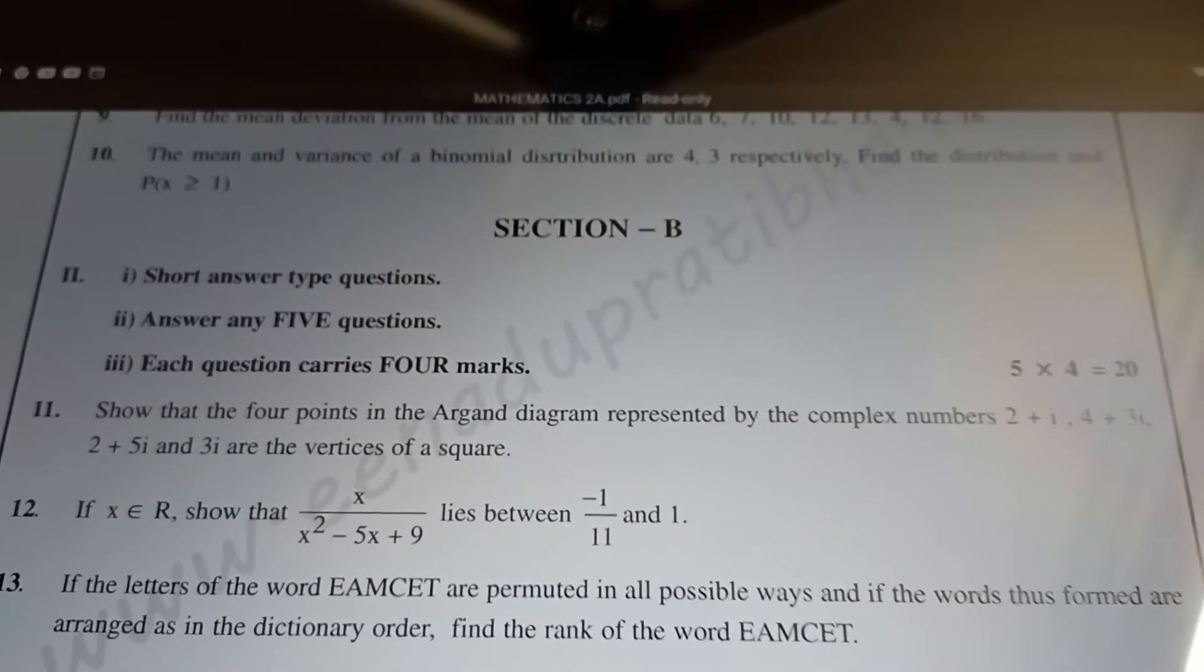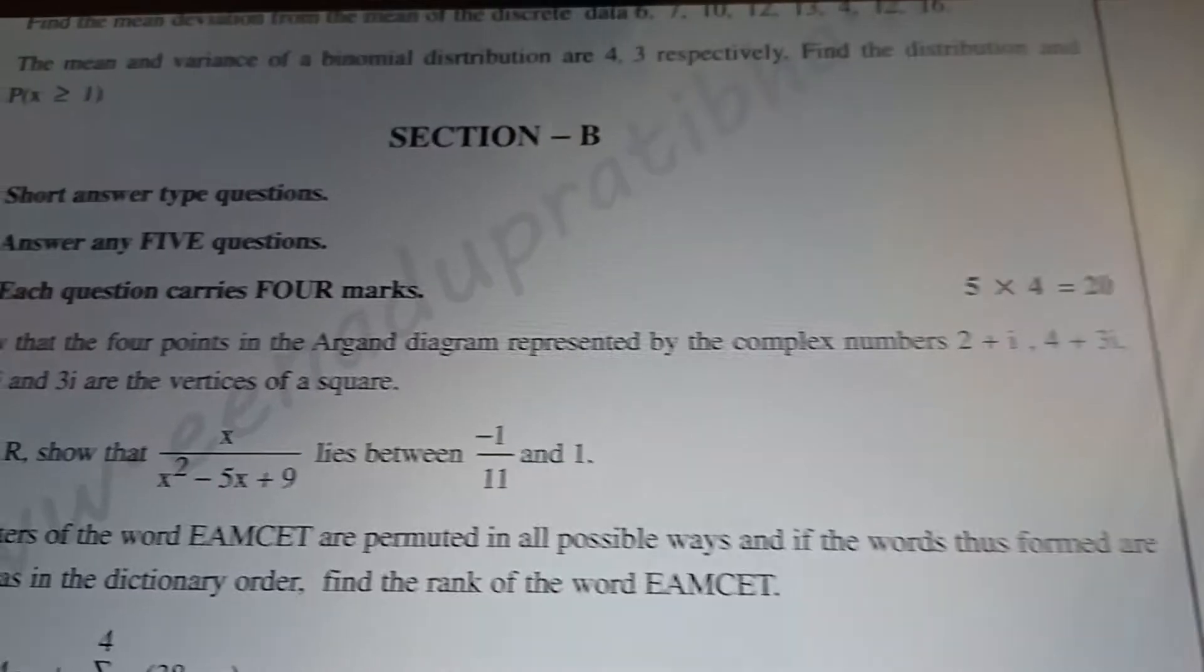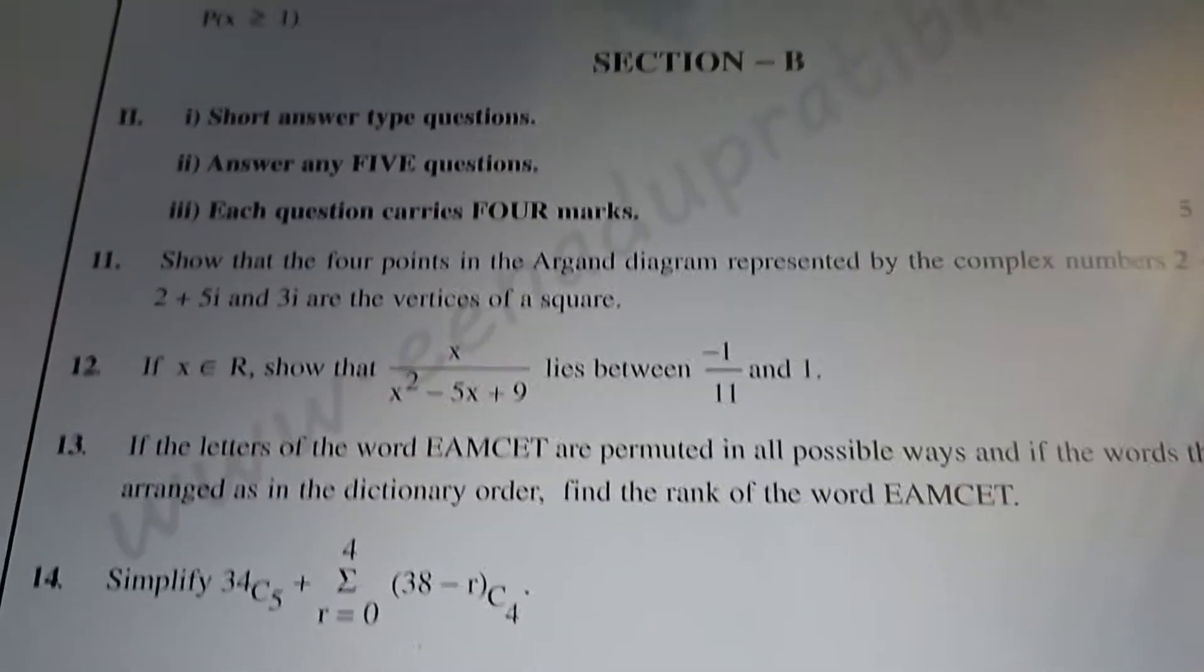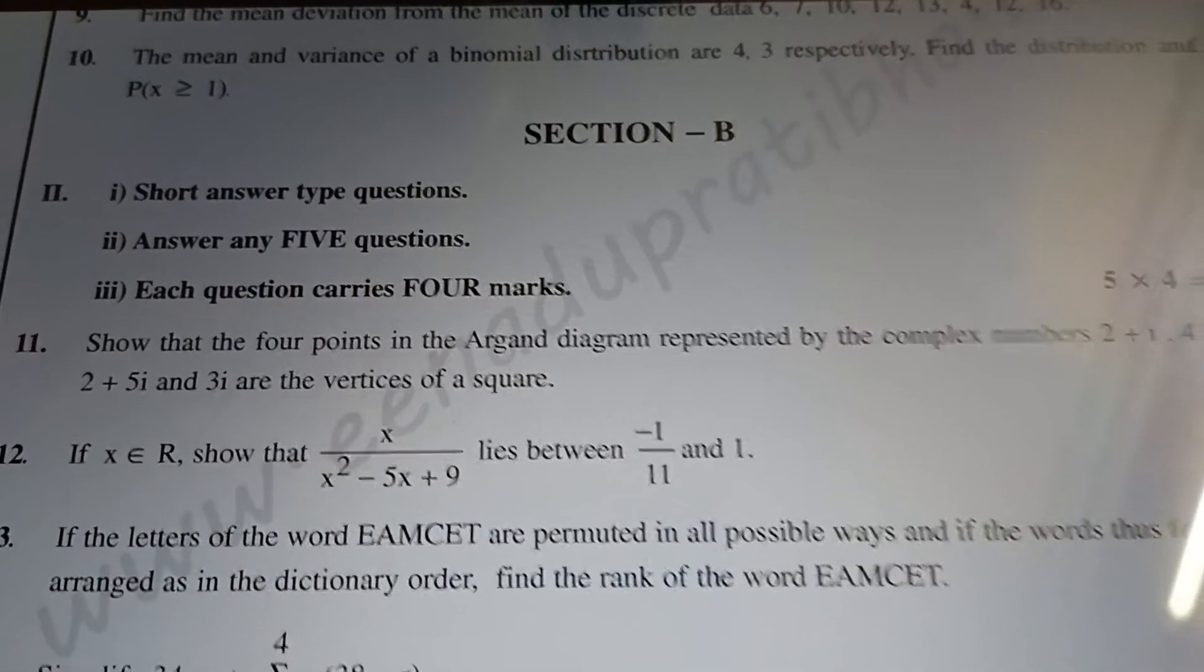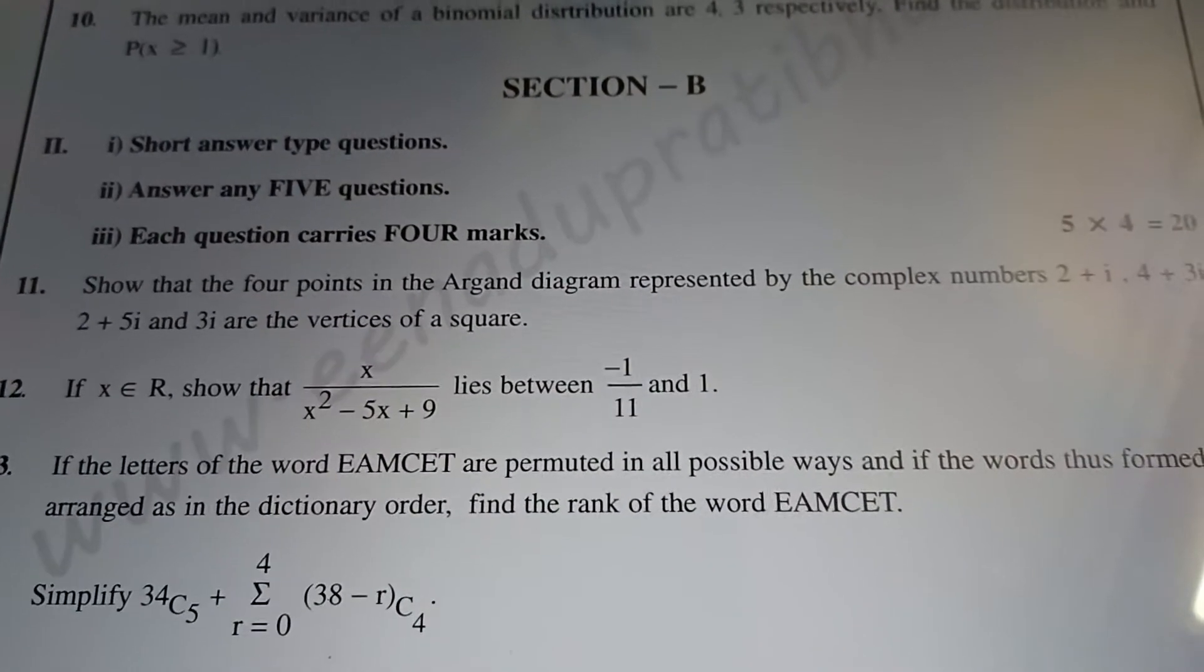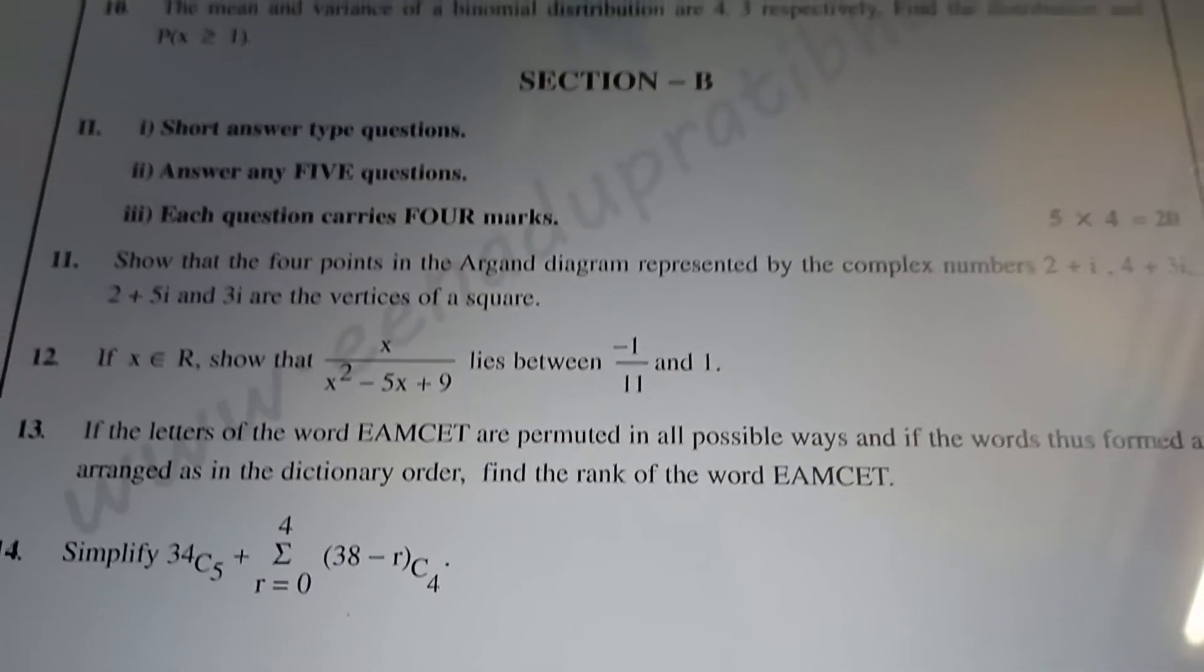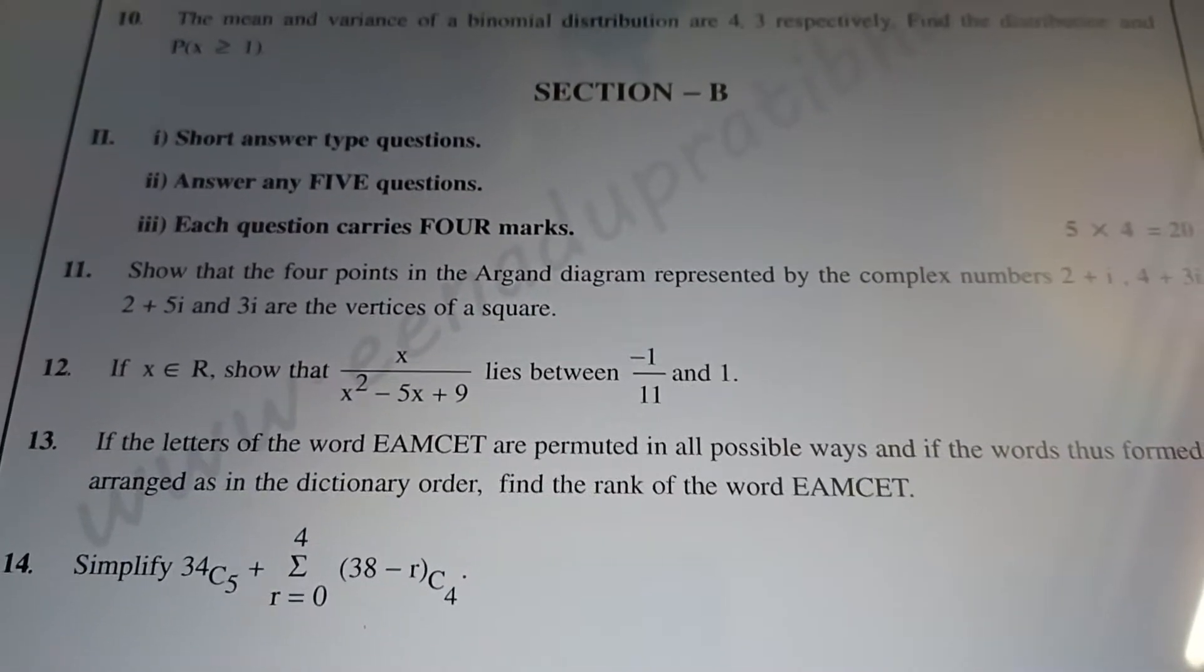This is shown that the 4 points are given. So you will have a question: 2 plus i, 4 plus 3i, 2 plus 5i, 3i are vertices of a square given. Next, X divided by X square minus 5X plus 9 lies between minus 1 by 11 and 1.